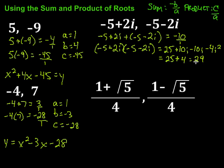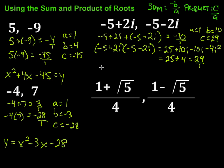Since they're not fractions I'll put them each over 1, and then pull out A, B, and C. A is 1. B comes from the sum — the sum is negative 10, so since it's negative B, B equals positive 10. C is 29. So the quadratic equation is y equals x squared plus 10x plus 29.